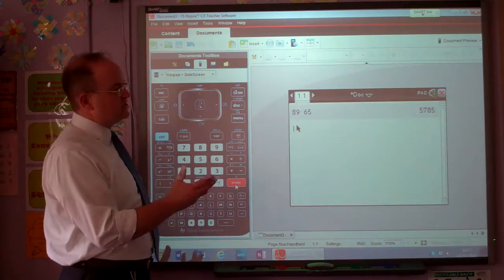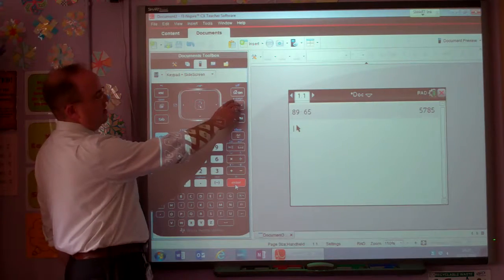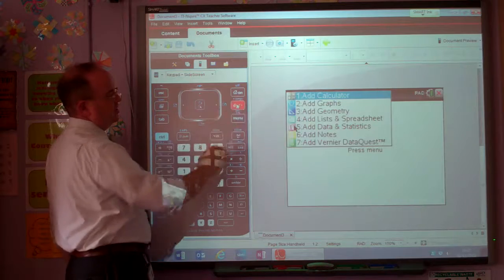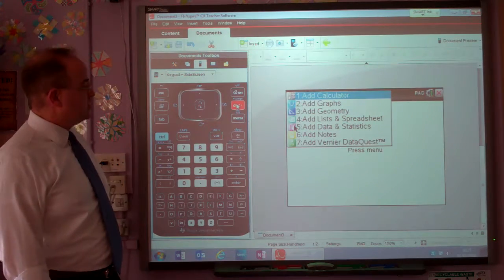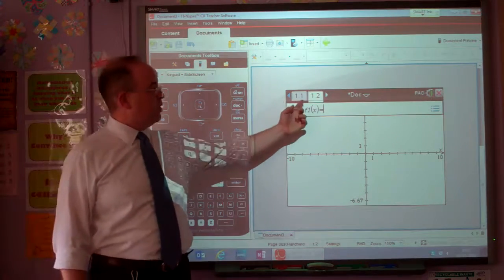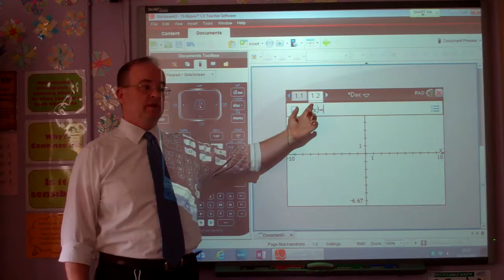Then we can add other pages to this document. You see here we've got plus page. It's in blue so we're going to press control on that. So that's going to allow us to add another page. So now let's add a graphs page. So we've now got page 1.2.